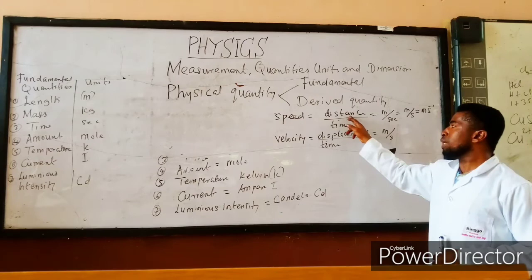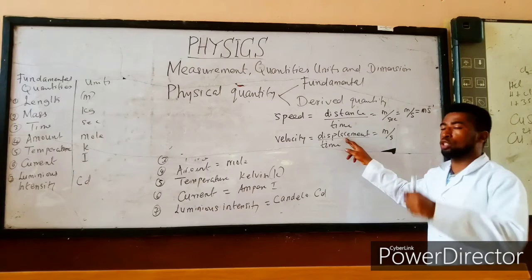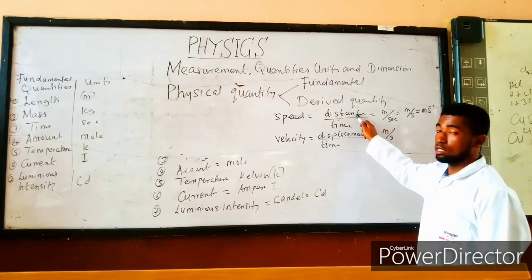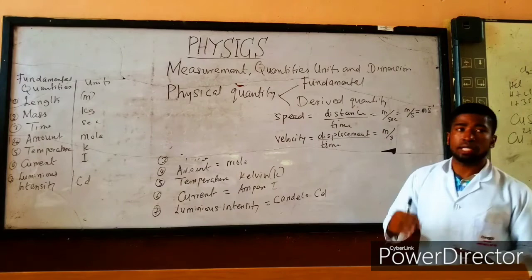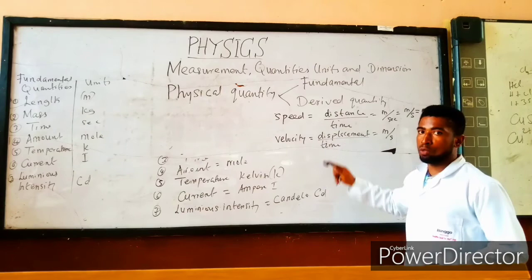There is a difference between distance and displacement. The movement of a body without a specific direction is distance, but the movement of a body with a specific direction is displacement. Distance is a scalar quantity and displacement is a vector quantity. Vector and scalar quantity is a topic we will analyze in our next lesson, so please don't panic.